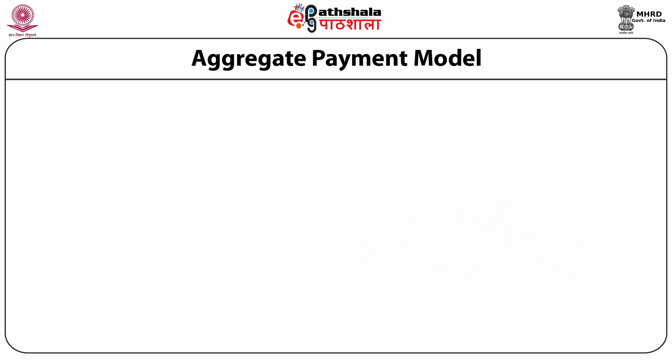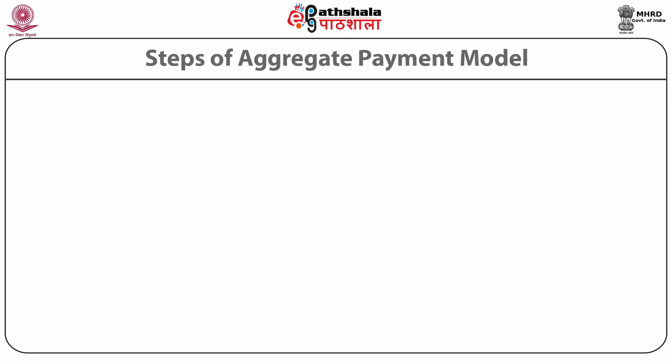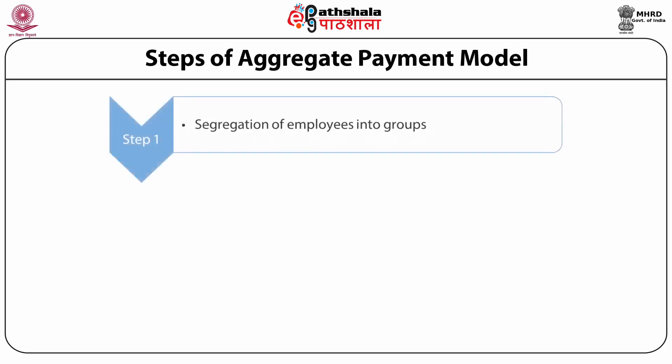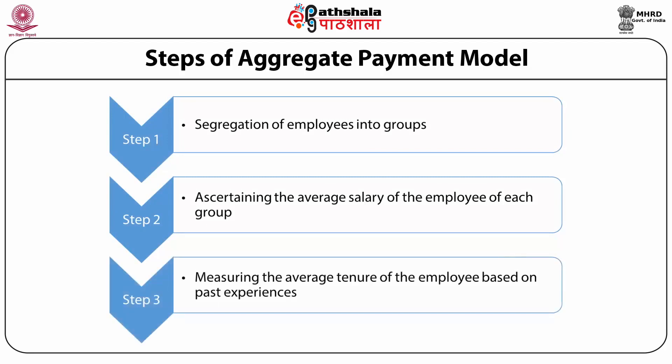Aggregate payment model. This model was developed by S.K. Chakrabarti, who suggests that the capital base of an organization should include the value of human assets. According to this method, the value of human resource is a function of the average salary of the employees and their average employment tenure in the organization. The model suggests that the ideal mode of identifying the value of human resources is group valuation and not individual valuation. There are three main steps: first, segregation of employees into groups; second, ascertaining the average salary of employees of each group; and third, measuring the average tenure of the employee based on past experience.